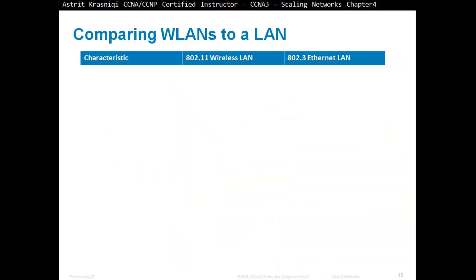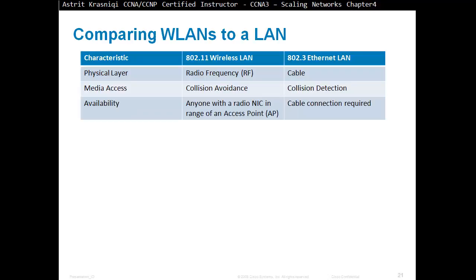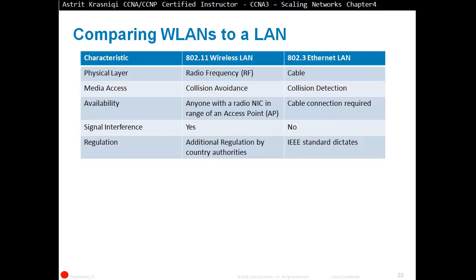Comparing WLAN to LAN: 802.11 wireless LAN versus 802.3 Ethernet LAN. In the physical layer, wireless uses radio frequencies — you need to be within range of the access point — while Ethernet requires a physical cable connection. For media access, wireless uses CSMA/CA — Carrier Sense Multiple Access Collision Avoidance — while Ethernet uses collision detection. Wireless LANs are prone to signal interference, while Ethernet is not. Wireless also requires additional regulation by country authorities, while Ethernet LAN is governed by IEEE standards.